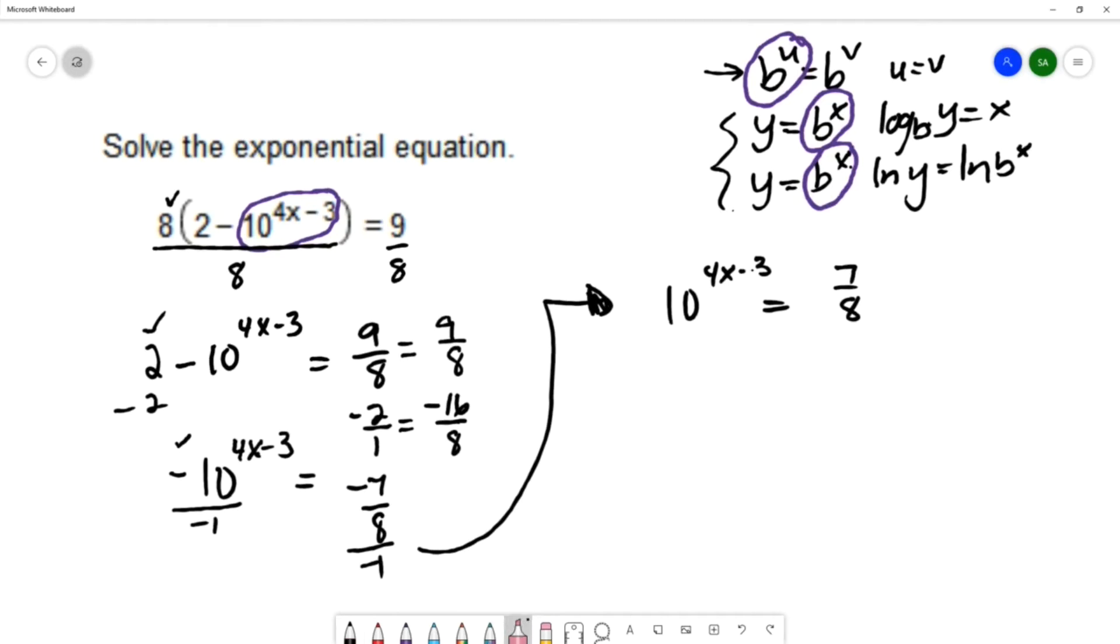When we look at the bases, I have a base of 10 and a base of 7 eighths. The first method of relating the bases requires the same base on both sides, so we can't use that method. But we can use one of these other two methods.